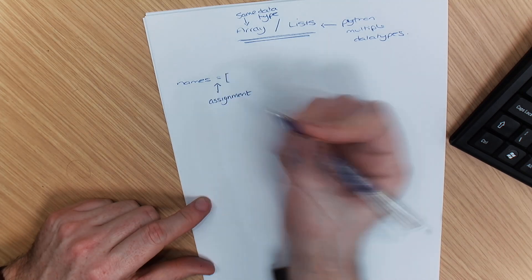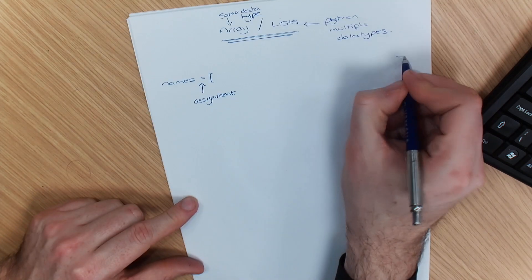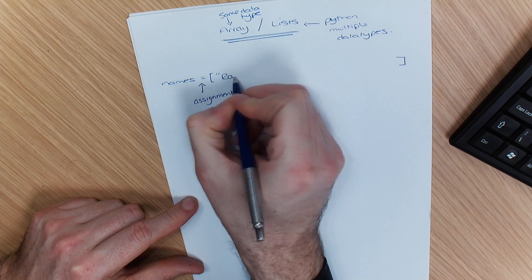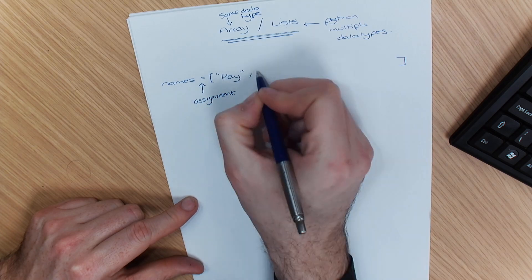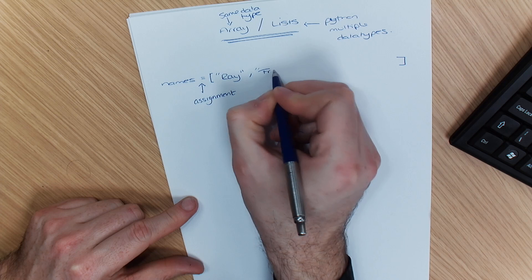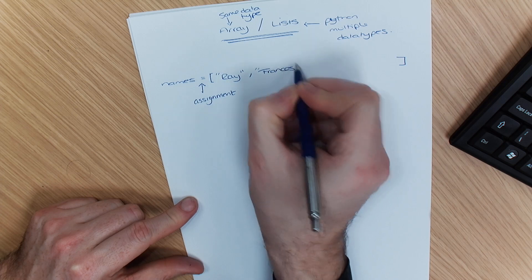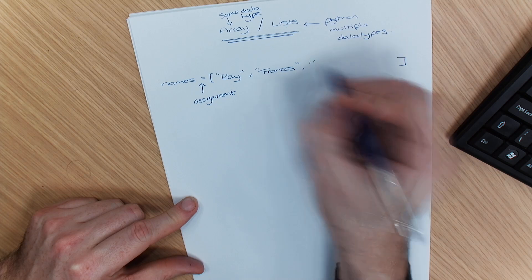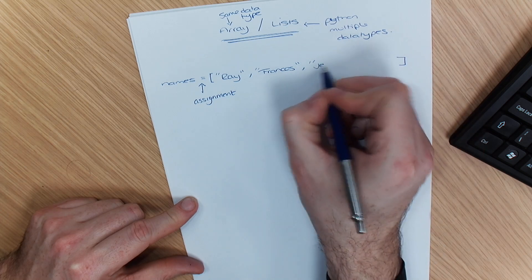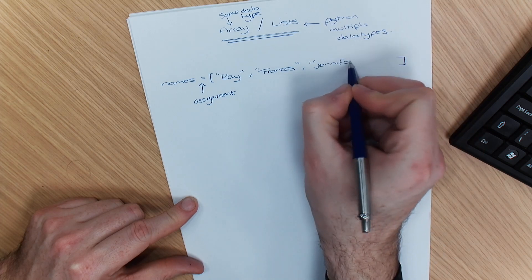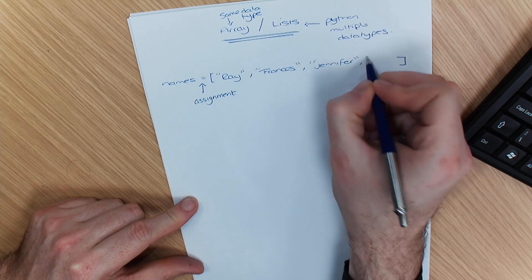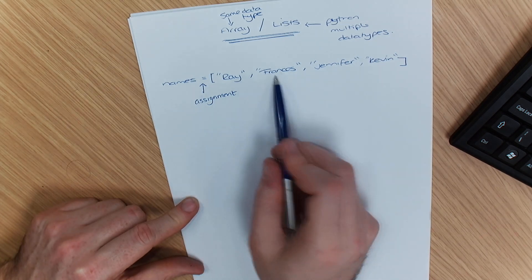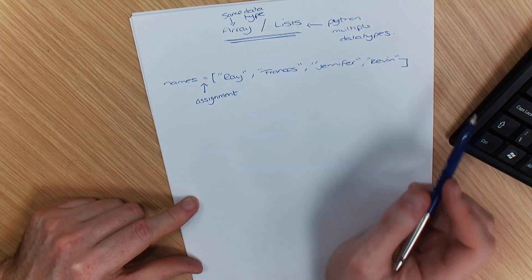And if I have a list of names here, I'm going to go for Ray, Francis, let's go for Peter and Kevin. So I've got four items in a single array.